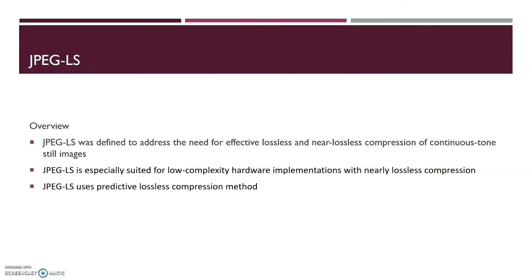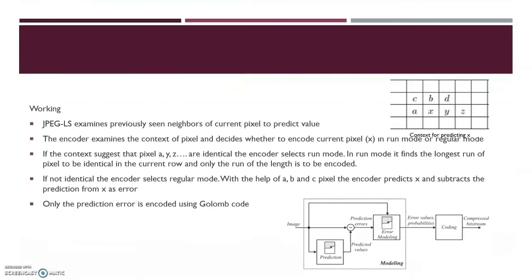The next standard is JPEG-LS, defined to address the need for effective lossless and near-lossless compression of continuous tone still images. JPEG-LS is specially suited for low complexity hardware implementations with nearly lossless compression. It uses a predictive lossless compression method, examining previously seen neighbors of the current pixel to predict its value. The encoder examines the context of pixels and decides whether to encode the current pixel in run mode or regular mode. The neighbors of pixel x are a, c, b, d, y, z. If the context suggests that pixels a, y, z and so on are identical, the encoder selects run mode, finding the longest run of pixels having similar values and encoding only the run length.